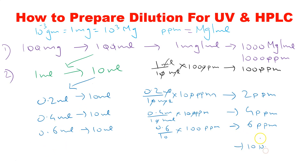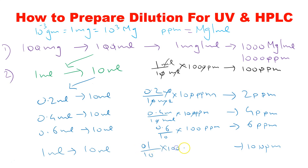For 10 ppm: take 1 mL and dissolve in 10 mL. 1 divided by 10, multiplied by 100 ppm = 10 ppm solution. This is how you can prepare dilutions for UV and HPLC. If you have any doubts, comment in the comment box and I will definitely answer. Thank you for watching.